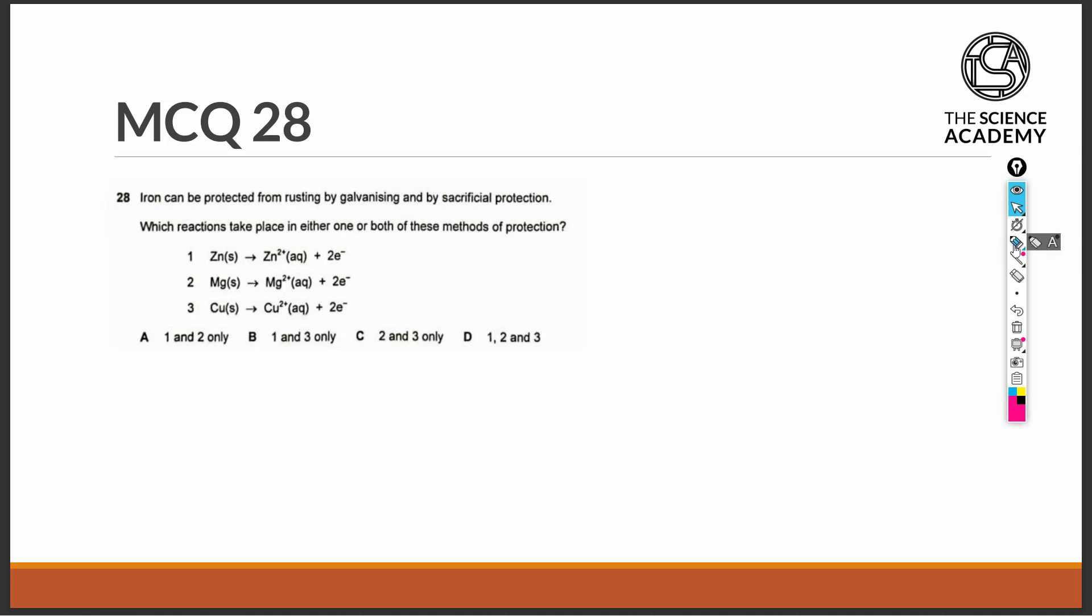Question 28. Iron can be protected from rusting by galvanizing and by sacrificial protection. Which reactions take place in either one or both of these methods of protection?